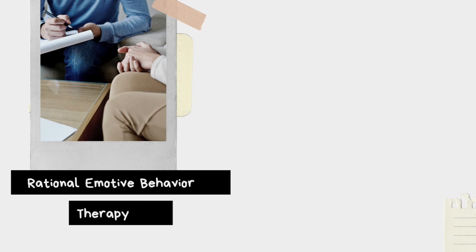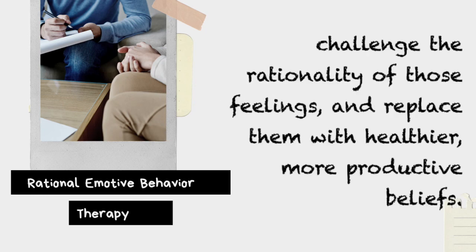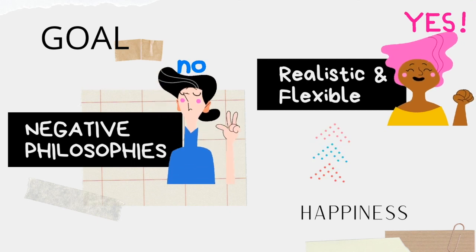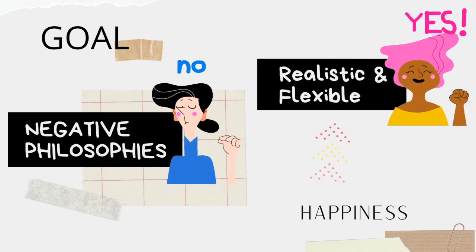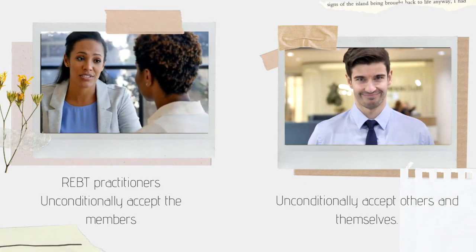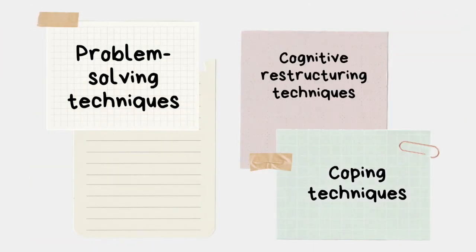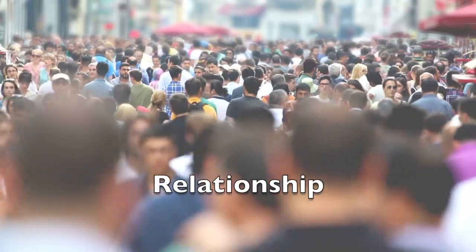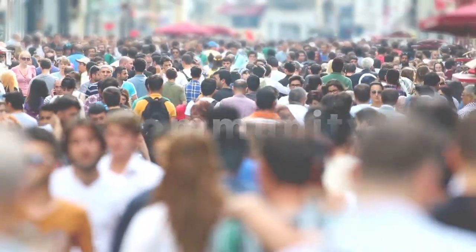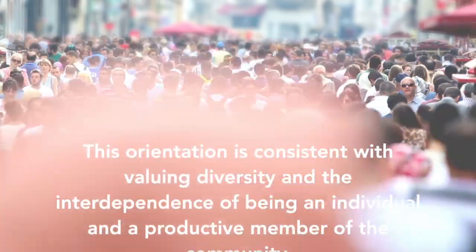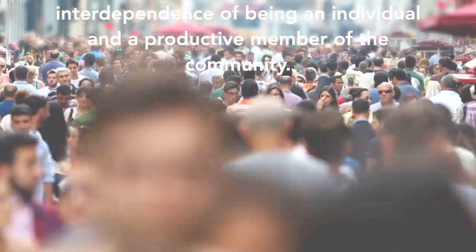Rational emotive behavior therapy (REBT) is a short-term form of psychotherapy that helps you identify self-defeating thoughts and feelings, challenge the rationality of those feelings, and replace them with healthier, more productive beliefs. The therapeutic goal of REBT is to get rid of patients' current negative philosophies and replace them with ones that are more realistic and flexible as a means of finding happiness. REBT practitioners strive to unconditionally accept the members of their groups and to teach them to unconditionally accept others and themselves. REBT techniques include problem-solving techniques, cognitive restructuring techniques, and coping techniques. REBT stresses the relationship of individuals to the family, community, and other systems, which is consistent with valuing diversity and the interdependence of being an individual and a productive member of the community.